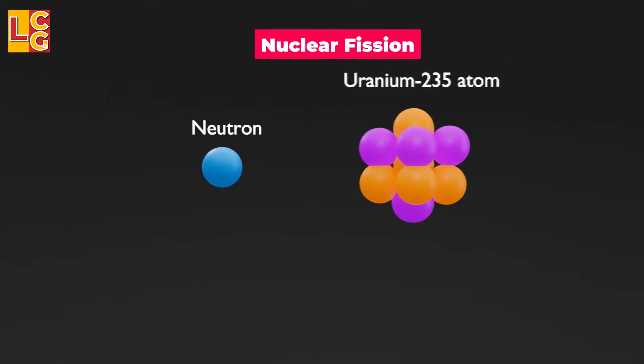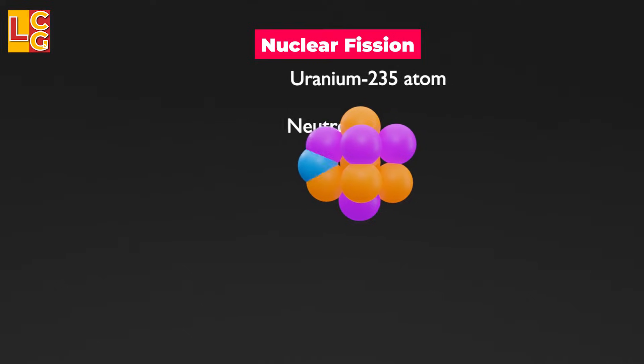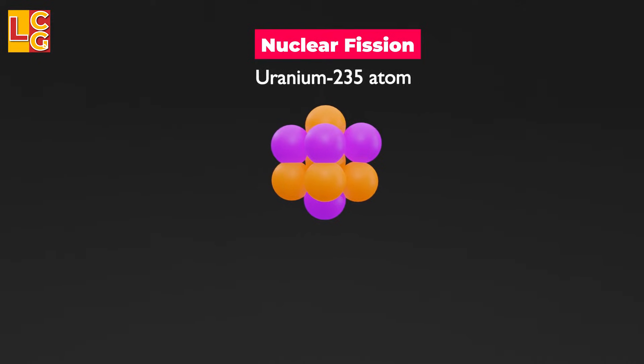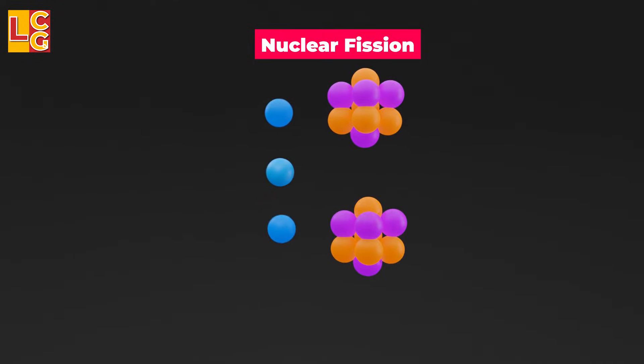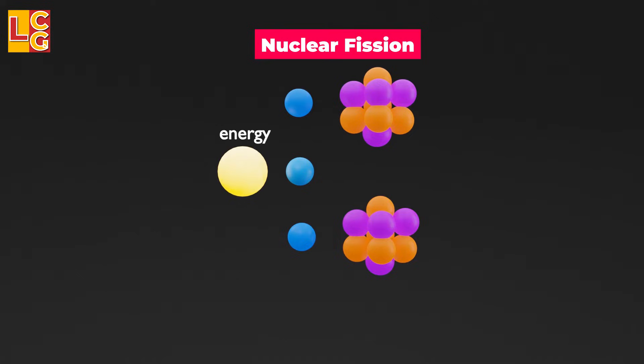For those who don't know, nuclear fission is the process of splitting an atom. Particularly in our example, the uranium atom is bombarded with a neutron in order to split it into two more uranium atoms. In doing so, three neutrons and energy are also released.